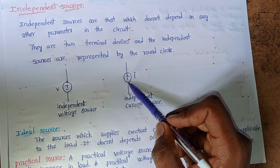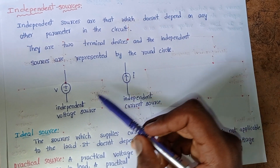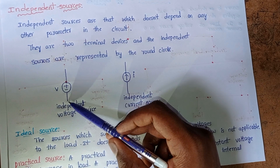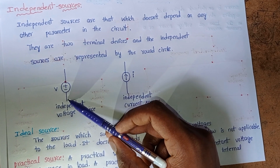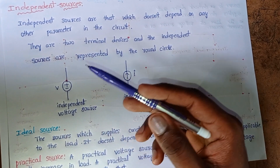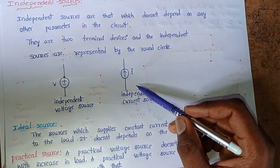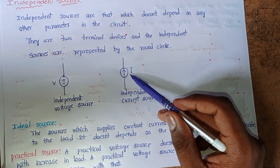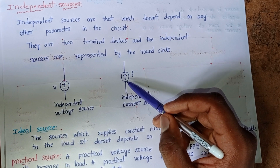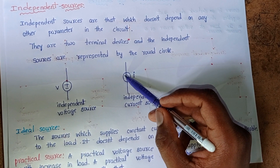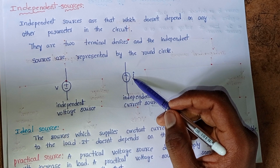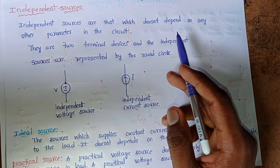In independent voltage sources we mention the polarities of voltage — that means positive polarity and negative polarity. In independent current sources we mention the current direction. This arrow represents the current direction. If the arrow is upwards, that means current is flowing from downwards to upwards. This is known as independent sources.